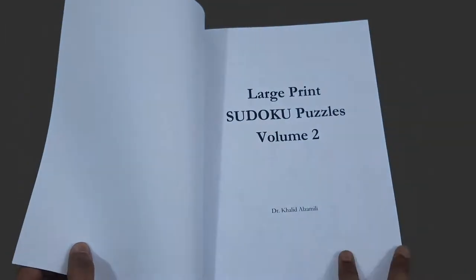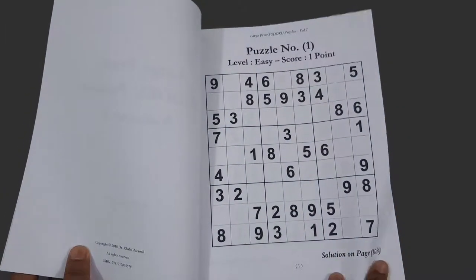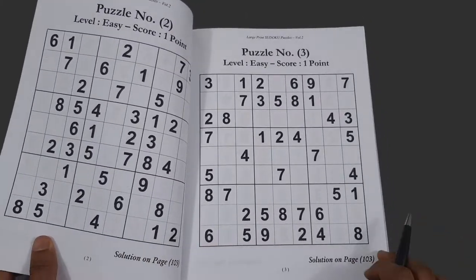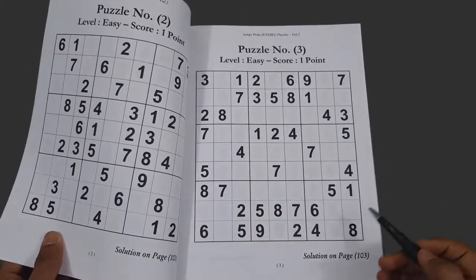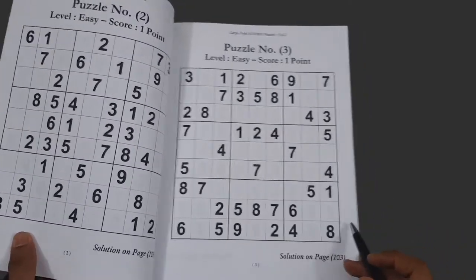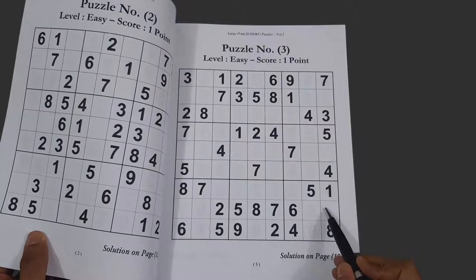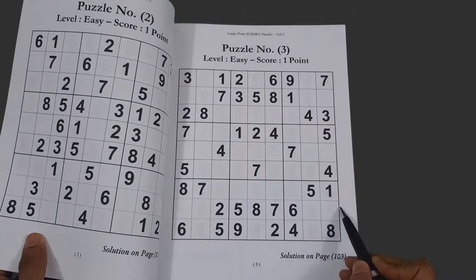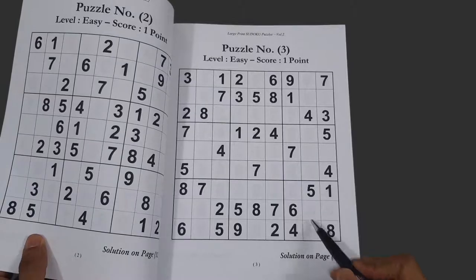Opening the book, you can immediately notice the large print size, which has two benefits. Number one is that it is easier to see for older and younger people alike. And number two is that you have more room to write down different possibilities for the numbers that go into each box.